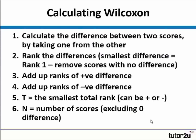Wilcoxon doesn't necessarily have a formula but it has steps that we follow. First, we calculate the difference between the two scores by simply taking one from the other. We then rank the differences, add up the ranks of the positive differences and add up the ranks of the negative differences. We find the smallest total rank, which gives us our value of T, and then we look at the number of scores to help us use the critical values table.